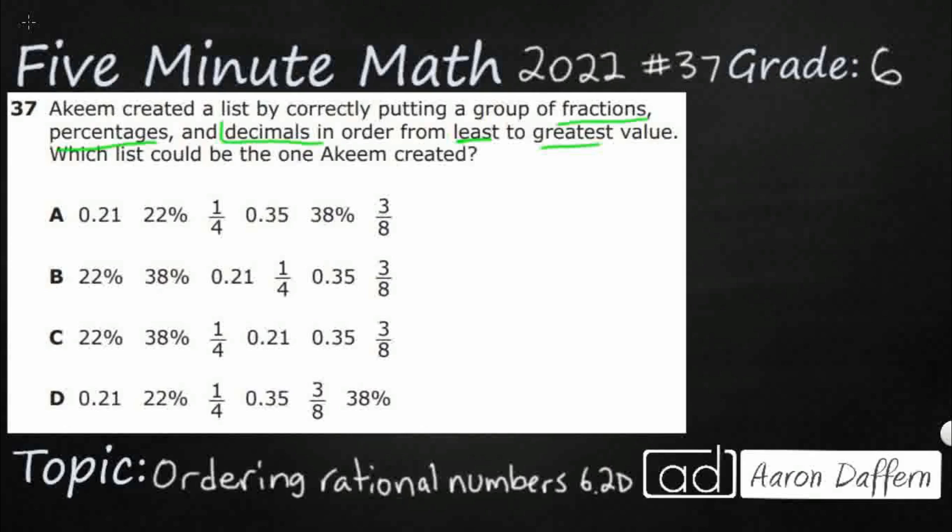And really, if we can change them all into one form, I always find decimals to be the easiest, because percentages and decimals are just very closely related. Fractions only work if they all have the same denominator, which can be a pain. So, let's change them all into decimals. If they're all in decimals, then ordering them is super easy.